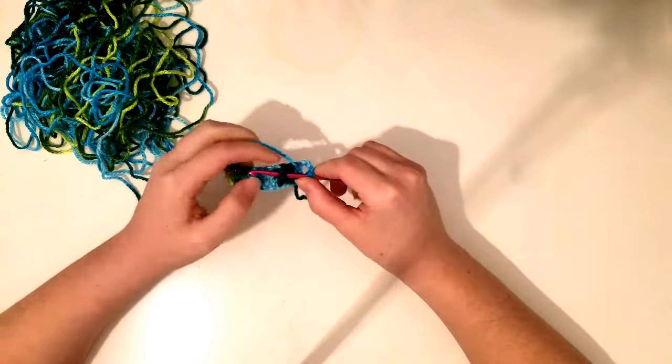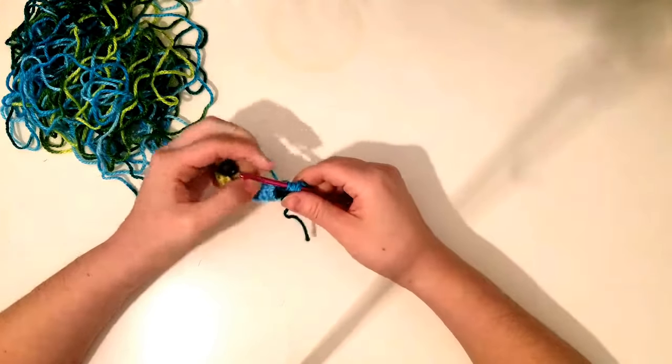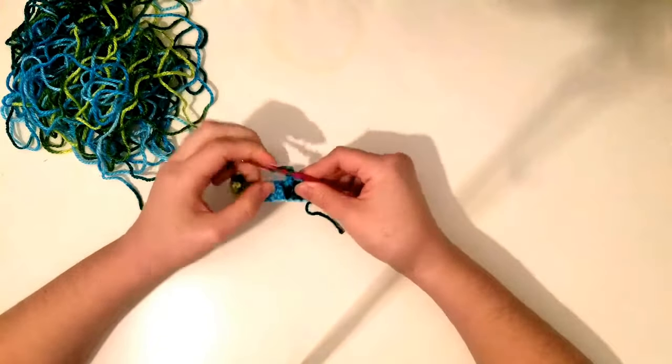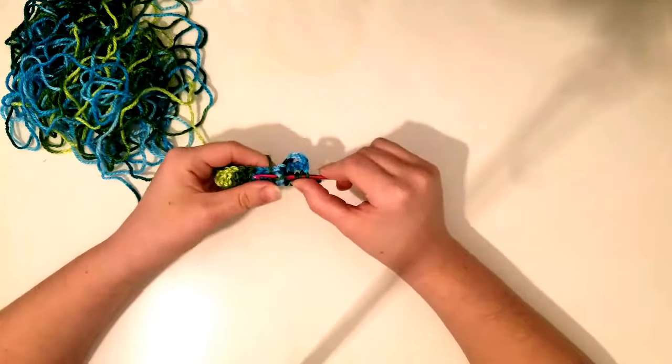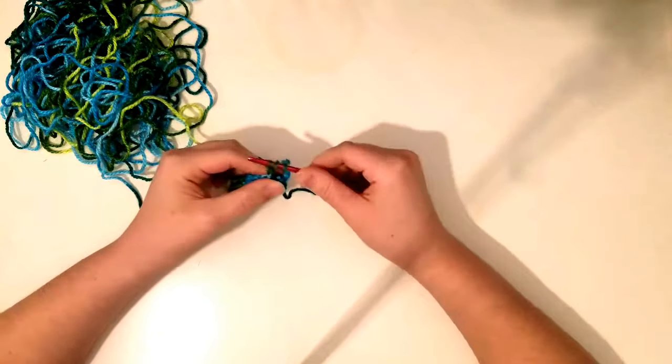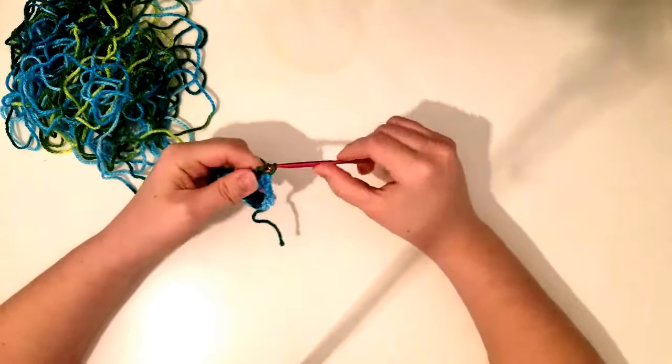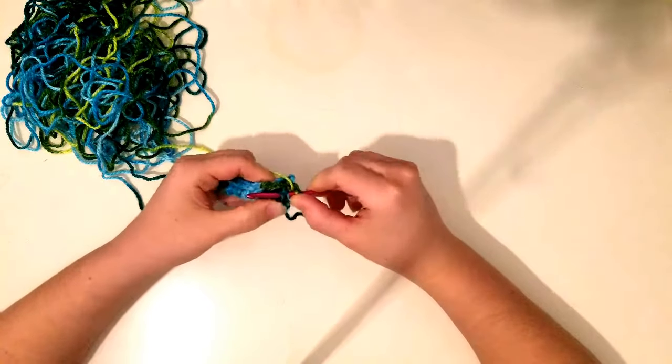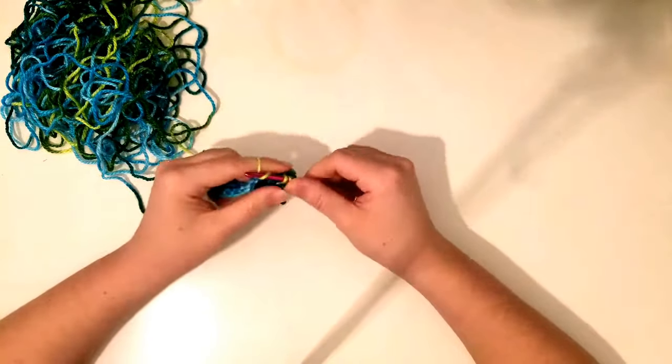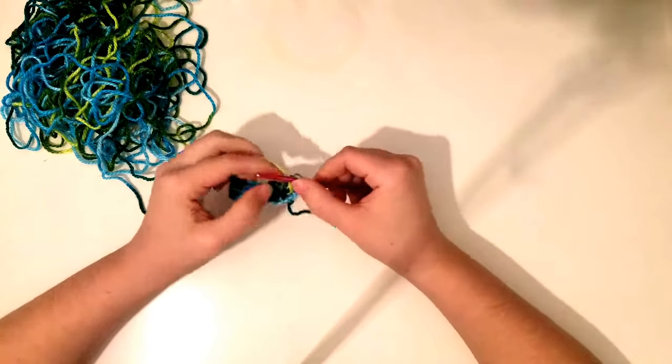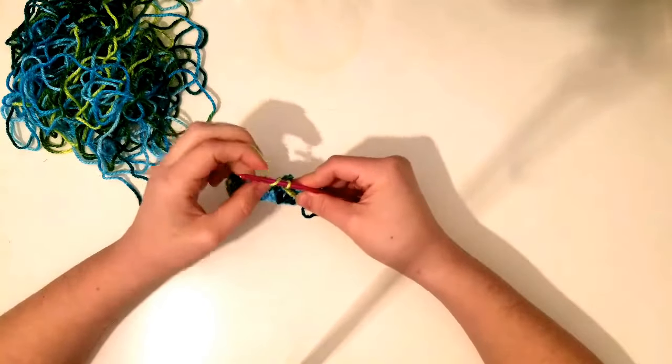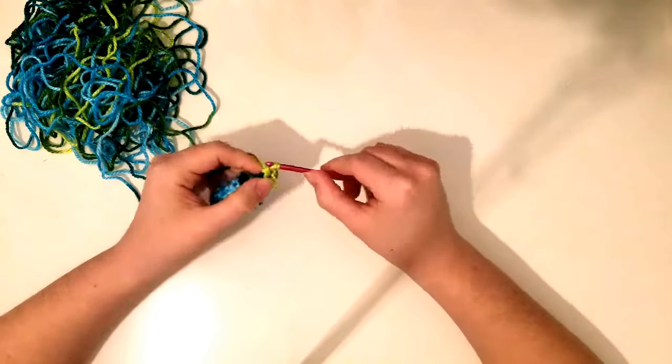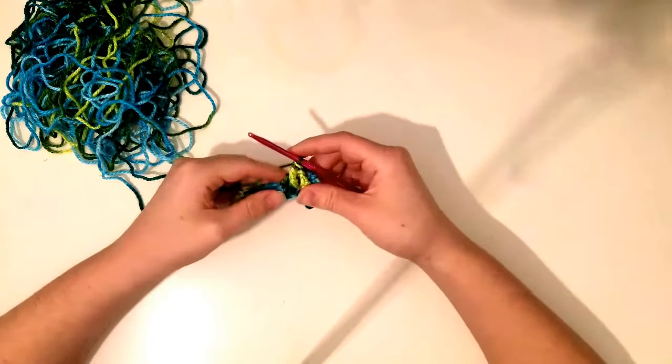So basically put your hook underneath the third one like a tunnel, bring it up, yarn it over, pull through your twos. Yarn it over twice, go through your tunnel, bring up a loop, pull through the two, pull through the two, and pull through the two. And go into that first one. Go through your twos. And grab your second one. And there's your first one.